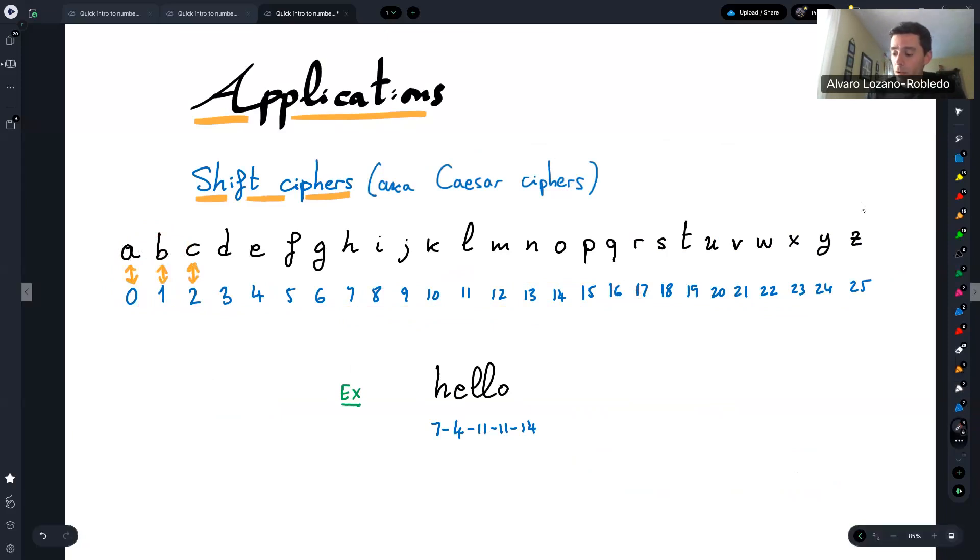And for example, the word hello translates to H is the number seven, E is the number four, L is the number 11, there's two 11s, and then 14, which 14 corresponds to the letter O.